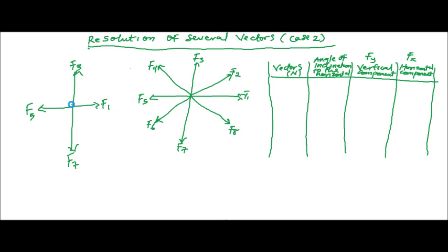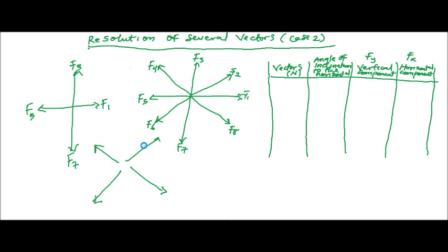Any vector that goes diagonally has a component on both X and Y. This applies in all diagonal directions — whether going up-right, up-left, down-right, or down-left, it has components on both X and Y. The key question is whether it falls on positive X or negative X. We established that F along X is plus or minus F cosine theta, and F along Y is plus or minus F sine theta.